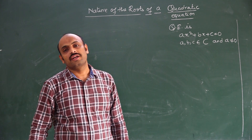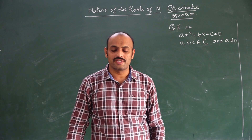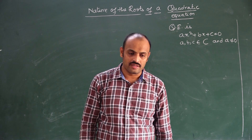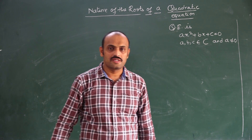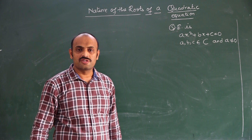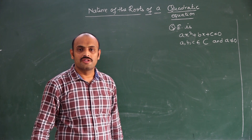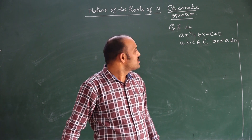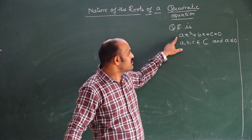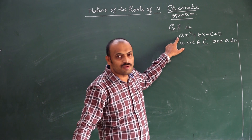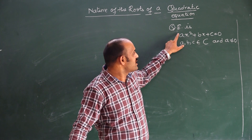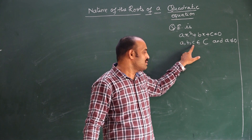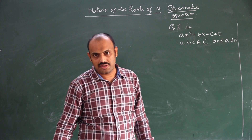What kind of roots will occur when a quadratic equation is solved? Whether it is real roots, whether the roots are equal or not, whether the roots are imaginary — how to check it? If a quadratic equation is of the form Ax² + Bx + C = 0, where A is not equal to 0, and A, B, C can belong to complex numbers.